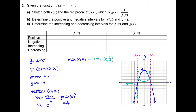For the rightmost region, starting from the green dot: to cover the blue part going left and up, the reciprocal function goes to the left and down. Starting from the green dot again, going to the right and down means the reciprocal goes to the right and up. Now we have the reciprocal function g(x).